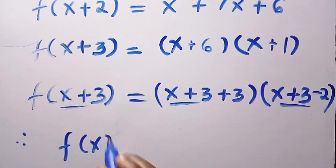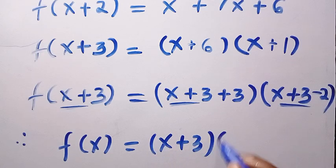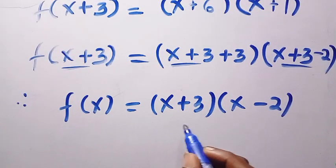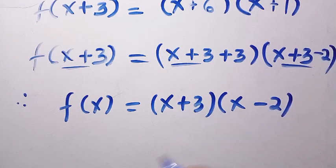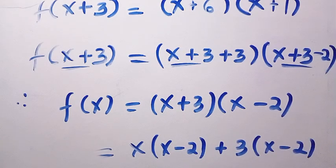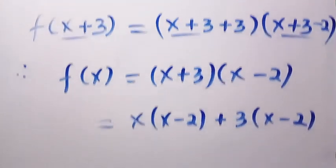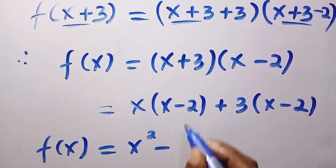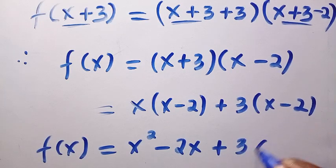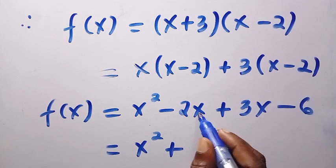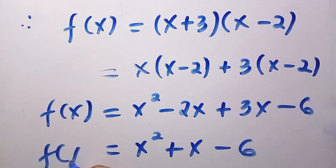After substitution, we replace every instance with x, and therefore we have f of x equals x plus 3 times x minus 2. This is the value of f of x. So if we expand this out, we have x into bracket of x minus 2 plus 3 into bracket of x minus 2. We have f of x equals x times x, that is x squared, minus x times 2, that is 2x. Then we have plus 3 times x, that is 3x, minus 3 times 2, that is 6. So we have x squared minus 2x plus 3x, that is x, then minus 6. So f of x equals x squared plus x minus 6.